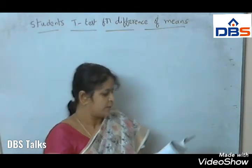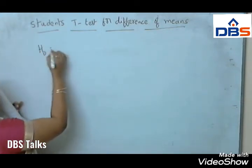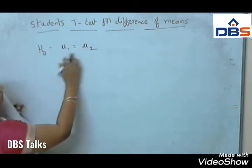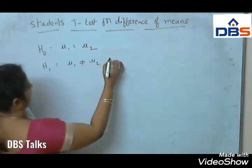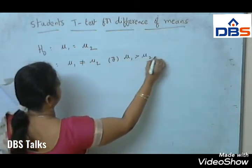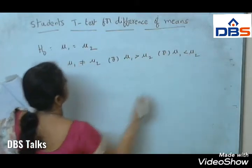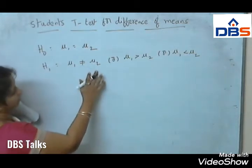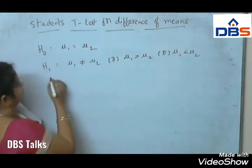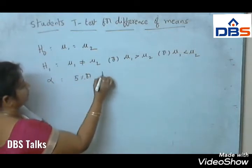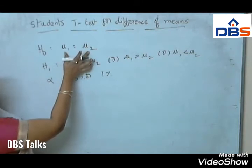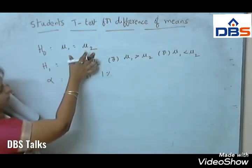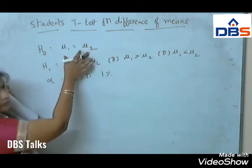For this, first let us set up H0: mu1 equal to mu2, where mu1 and mu2 are two population means. H1: mu1 not equal to mu2, or mu1 greater than mu2, or mu1 less than mu2. Alpha is 5% or 1%. So this is the null hypothesis H0 — that the two sample means are equal. Next, we will test whether this statement is accepted or rejected.